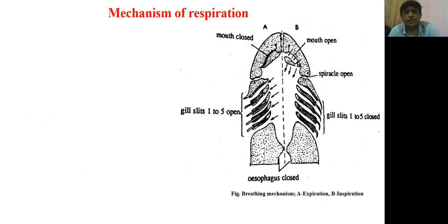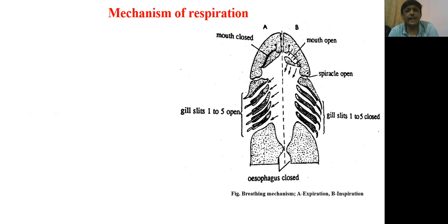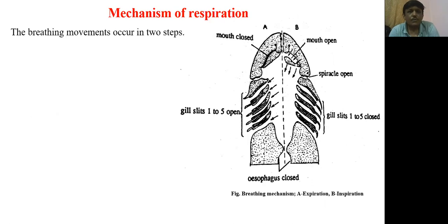Now we are going to study the actual mechanism of respiration. The mechanism of respiration in Sclerodon includes two processes: expiration and inspiration. The breathing movement is carried out in these two steps.